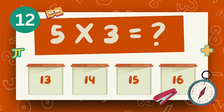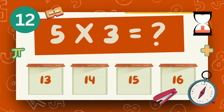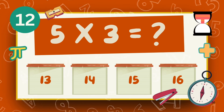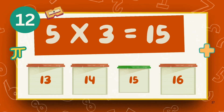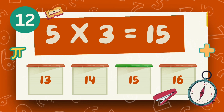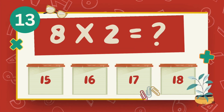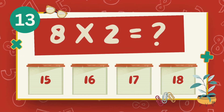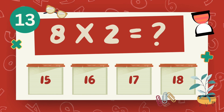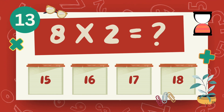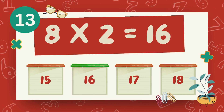What is 5 multiply 3? The answer is 3. The answer is 16.